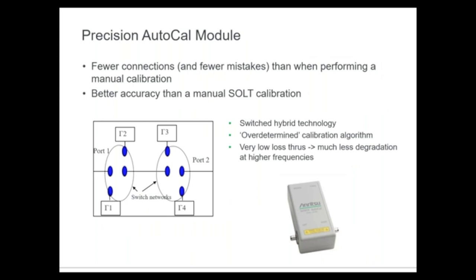The AutoCal module has all the standards internal with switches. Under serial control of the VNA, we switch the various standards to complete the calibration. The algorithm is different from SOLT because we're actually using more standards than required to cover the frequency range of interest — it's a redundant or over-determined calibration algorithm. This provides additional accuracy over manual techniques. There are also very low-loss through lines inside used for the transmission portion of calibration. The AutoCal greatly simplifies the calibration process and is completely controlled by the VNA.